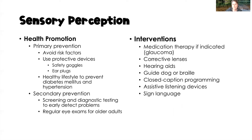For health promotion, we need to think about primary and secondary prevention. Primary prevention means minimizing the chance that existing risk factors turn into a problem — avoiding loud noises, wearing protective devices like safety goggles and earplugs, and maintaining a healthy lifestyle to prevent diabetes mellitus and hypertension through diet and exercise. Secondary prevention involves screening and testing to detect early problems so they can be treated as soon as possible.